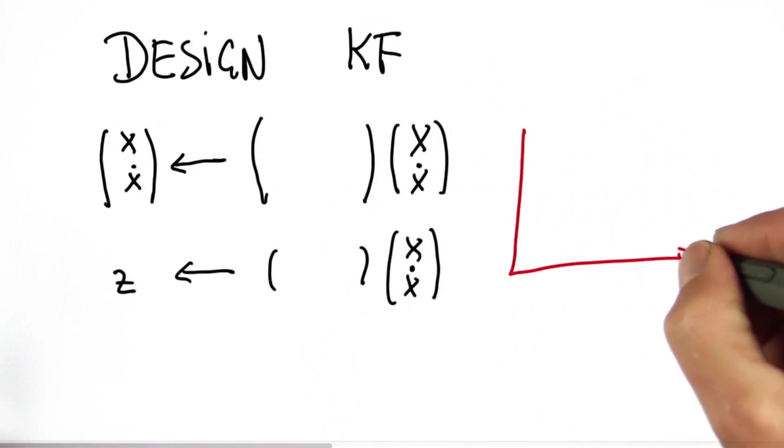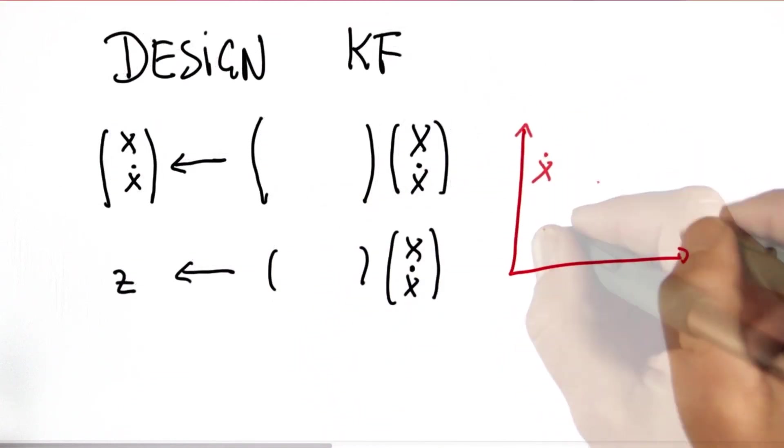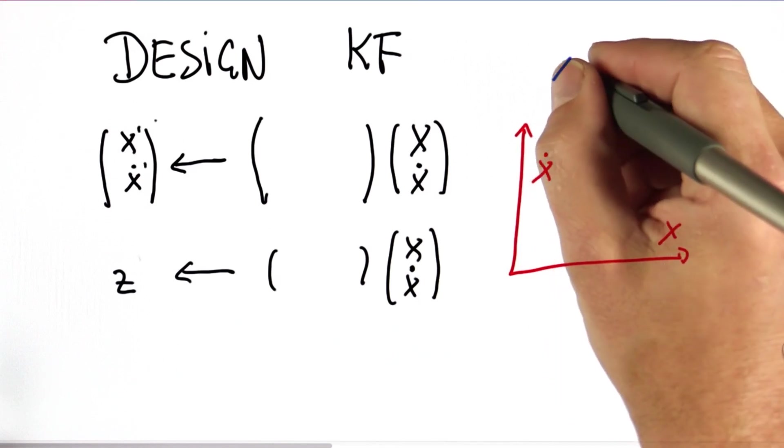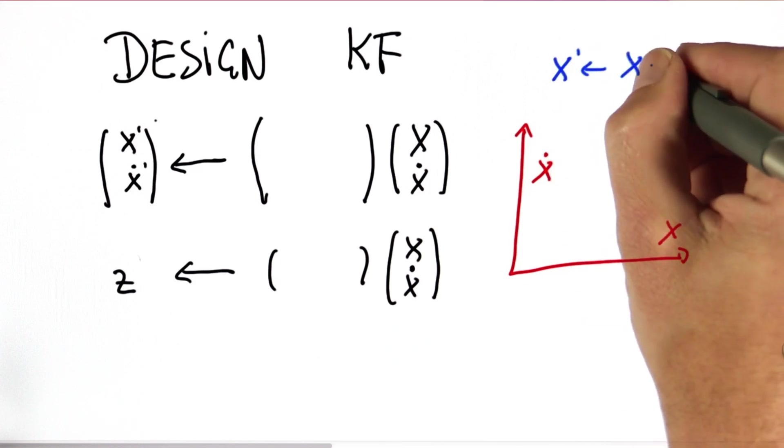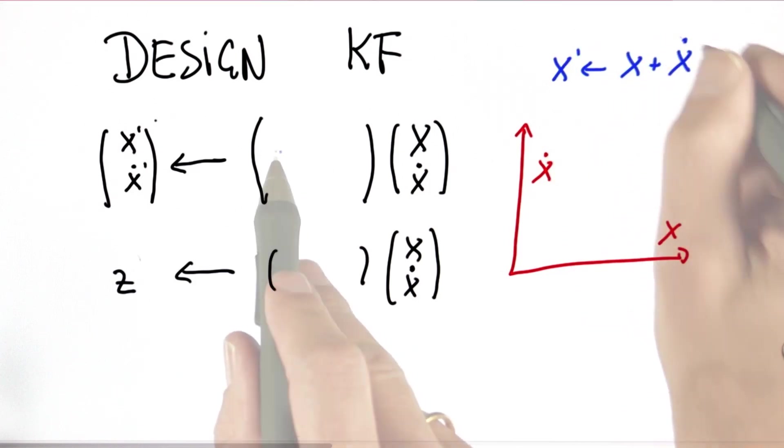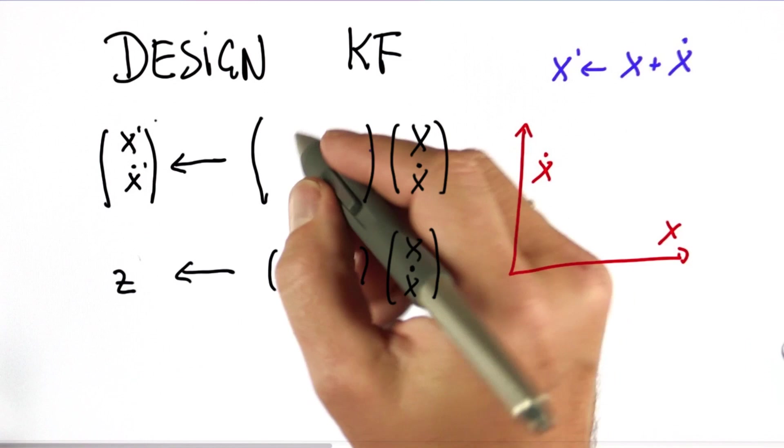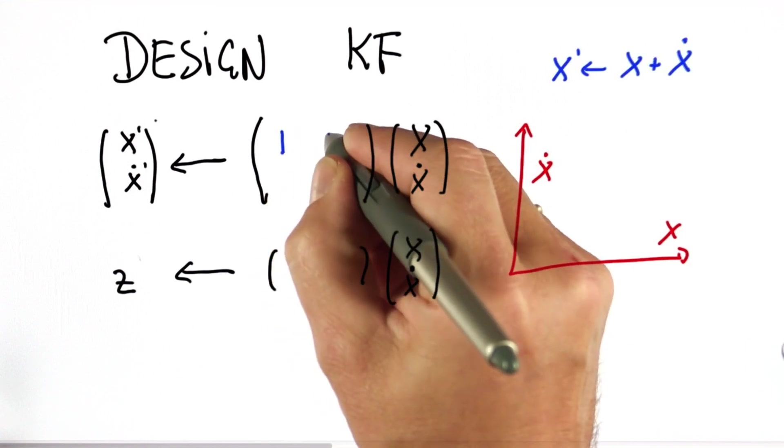So let me give you those for our example of the 1D motion of an object. We know that the new location is the old location plus velocity. Turning this into this matrix, you have a 1 over here and a 1 over here.